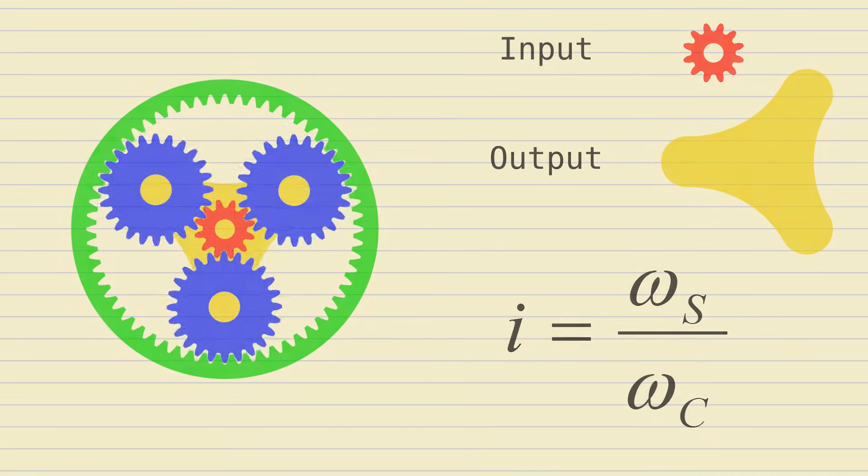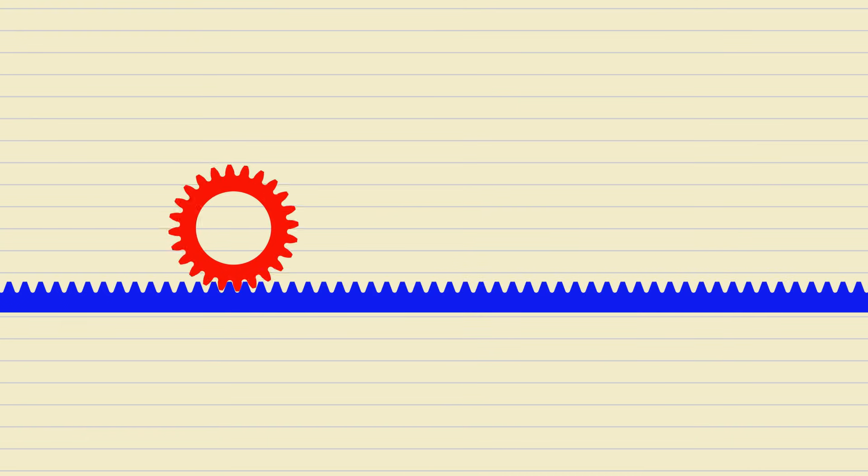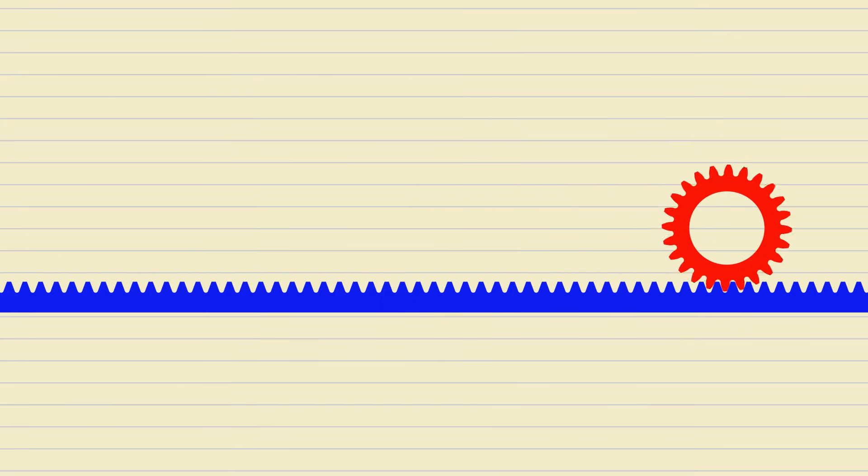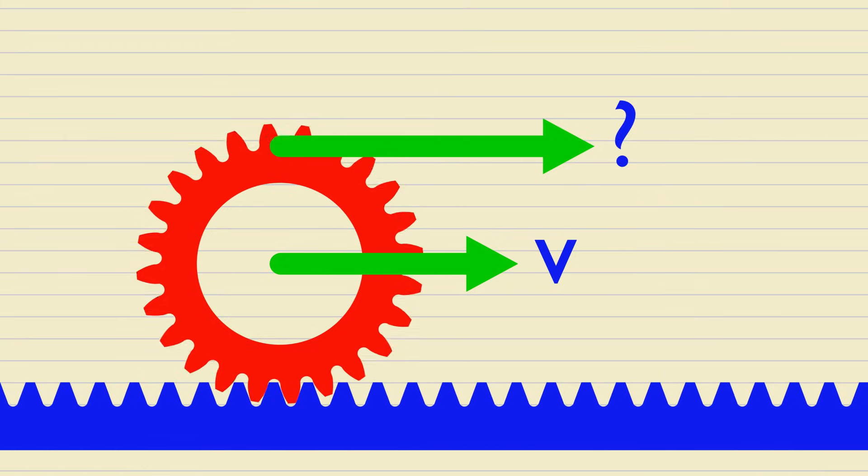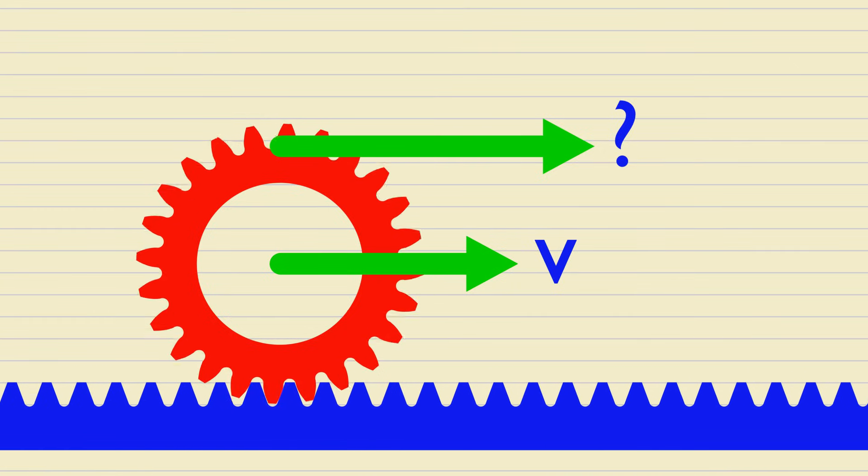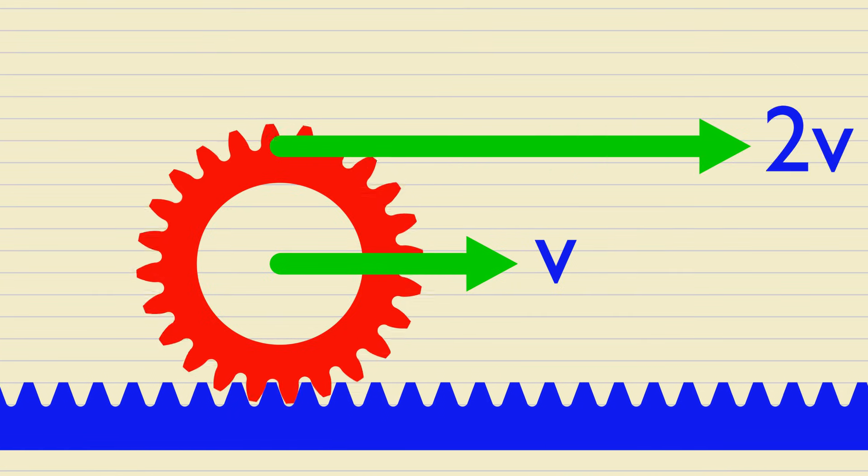To compute it, let's consider a school-level physics problem. A wheel rolls without slippage. The linear velocity of the wheel center is v. What is the instantaneous velocity of the top point of the wheel? It turns out, that velocity is simply 2 times v.